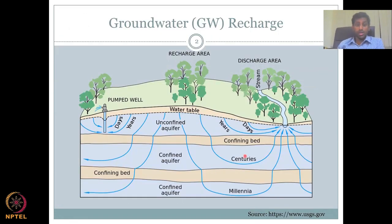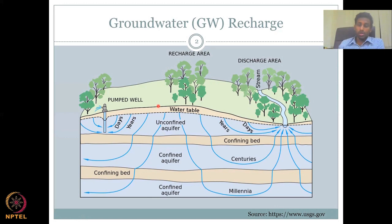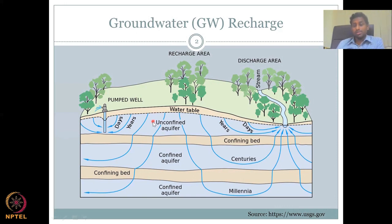The recharge area, which you see on the top of the land, is the predominant phase where water comes in. Water also comes through streams and rivers, but that is much less compared to precipitation-induced groundwater recharge. Visualize yourself as a water droplet — you come, infiltrate, and get into the first unsaturated, then saturated zone.